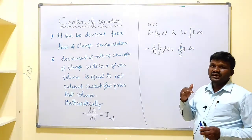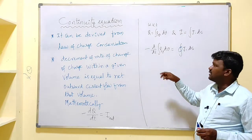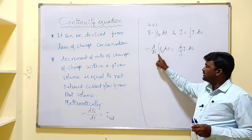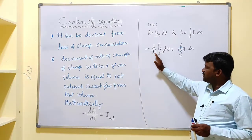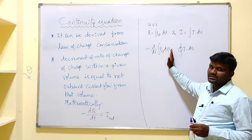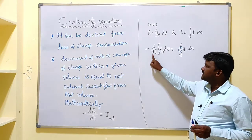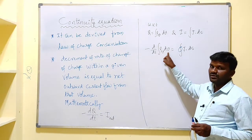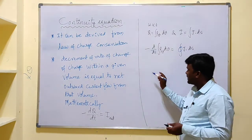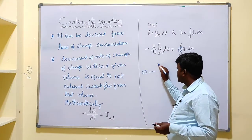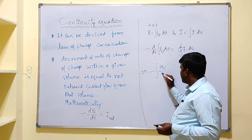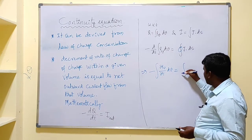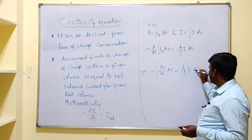Now let us simplify. dV means dx dy dz — these are space variables, whereas t is time. If we move the time derivative inside the integration, since time is independent of the space variables, the differentiation becomes a partial differentiation. That is why this can be written as: minus the integral of (∂ρv/∂t) dV equals the closed surface integral of J·dS.